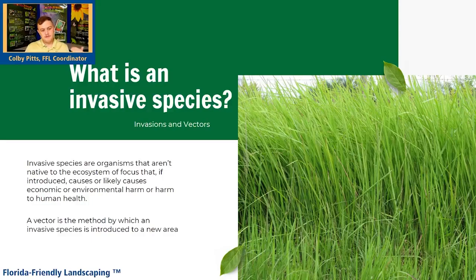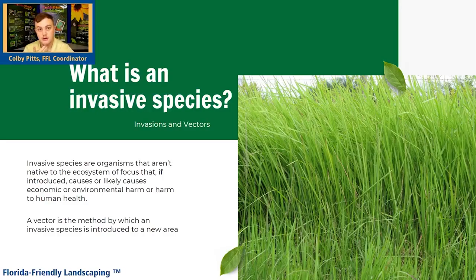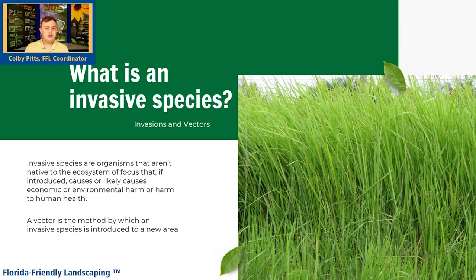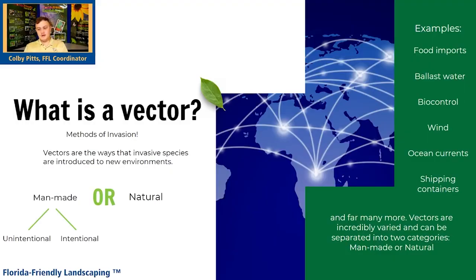We're going to talk about invasive species and vectors. A vector is how the species gets there. We have a whole slide on vectors we'll get to. This picture right here is Cogon grass, which if you're a Hernando County local you've seen. It's on Highway 50, it's on Shoal Line — it's everywhere.